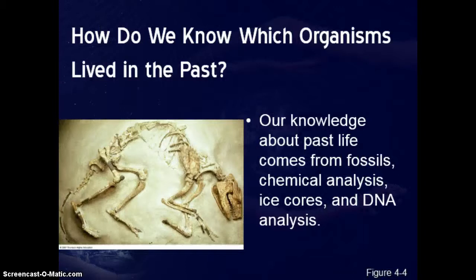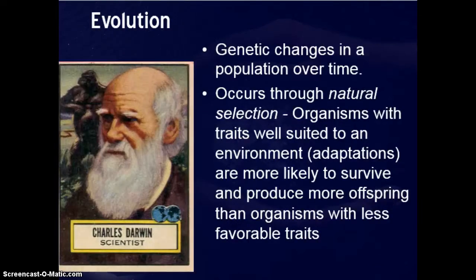How do we know all this — what lived in the past, etc.? Most of it comes from fossil evidence, analyzing different chemicals and where they appear in different organisms including DNA, or analyzing chemicals available in ice cores. Basically all of it supports the process of evolution.